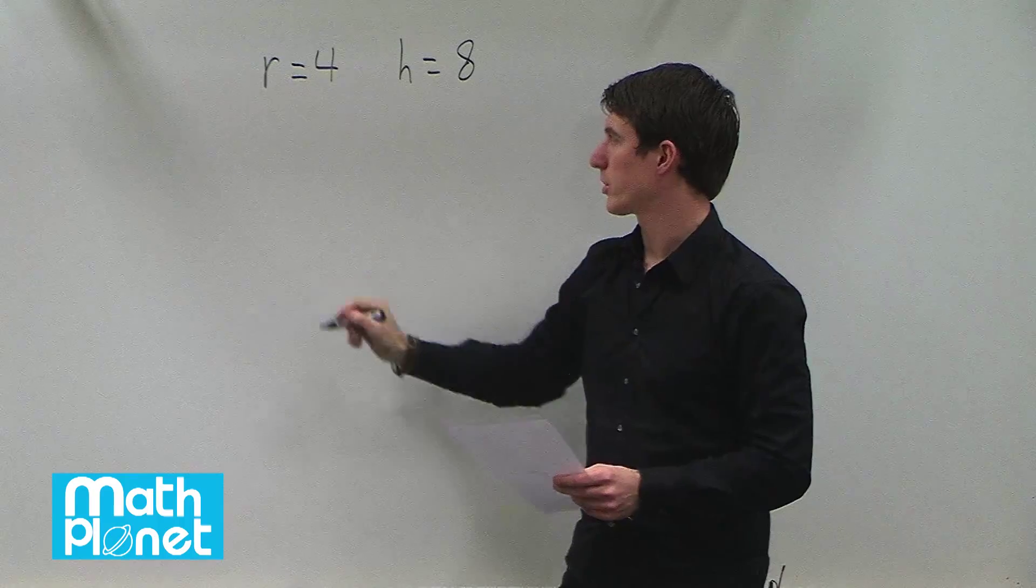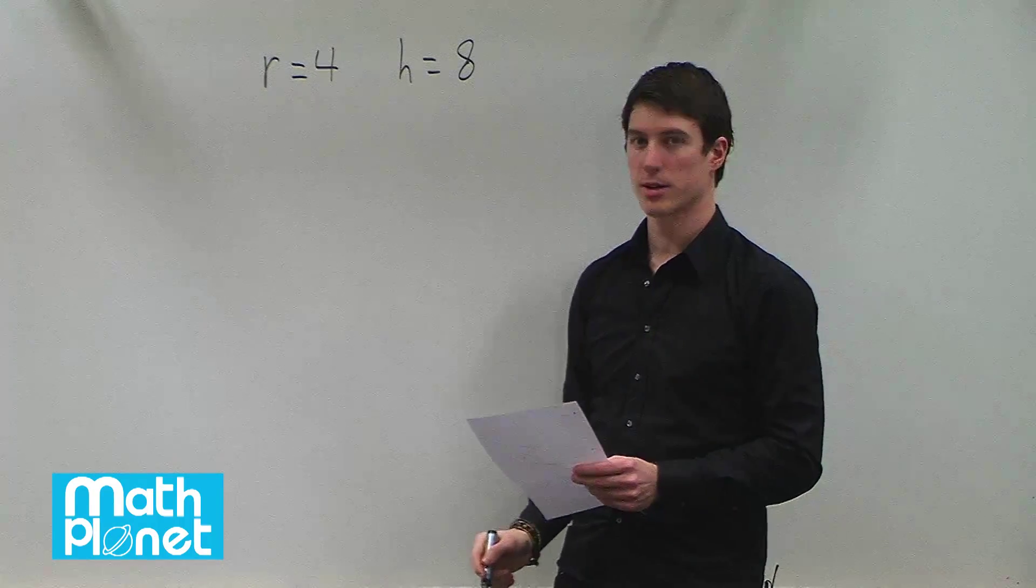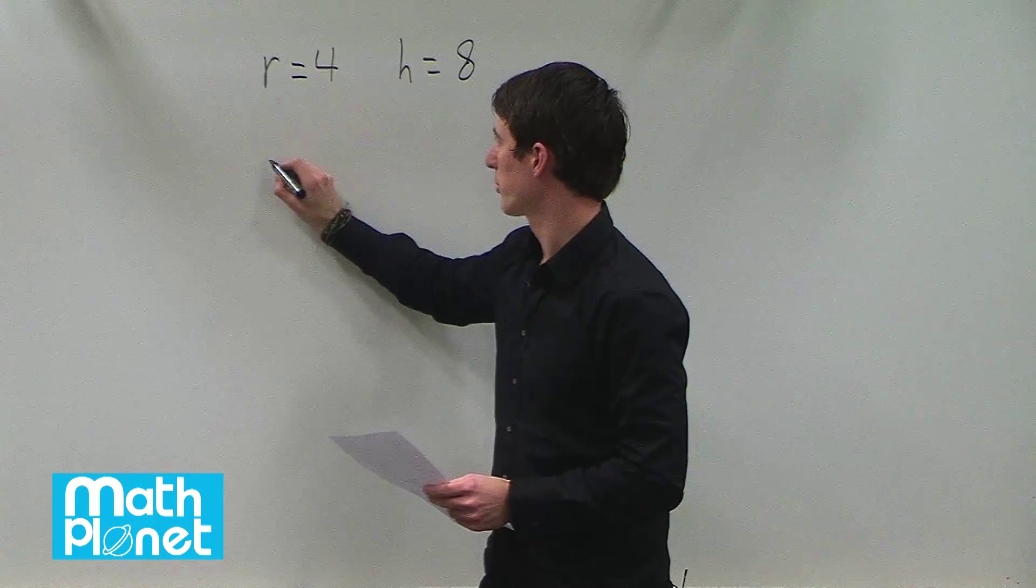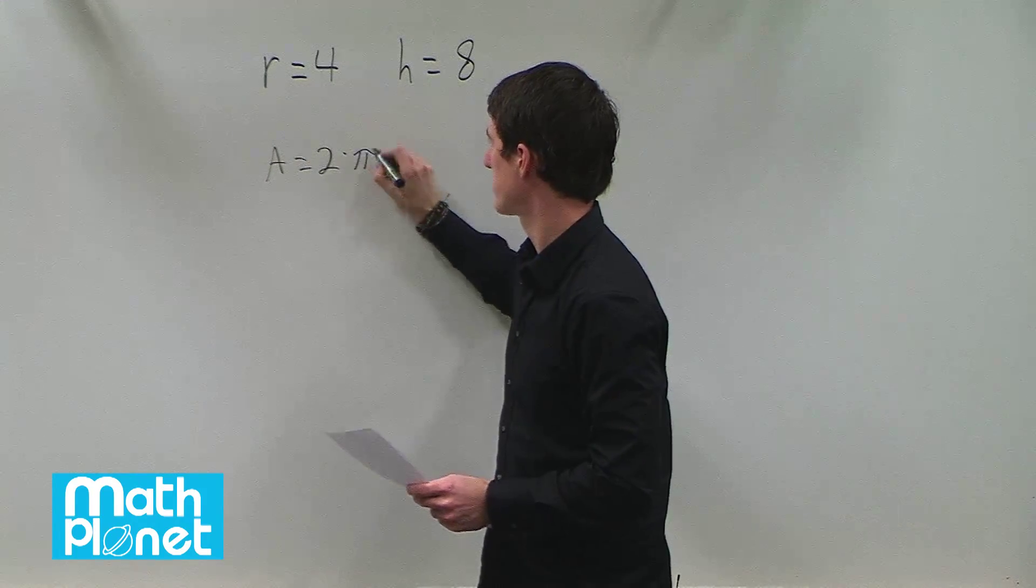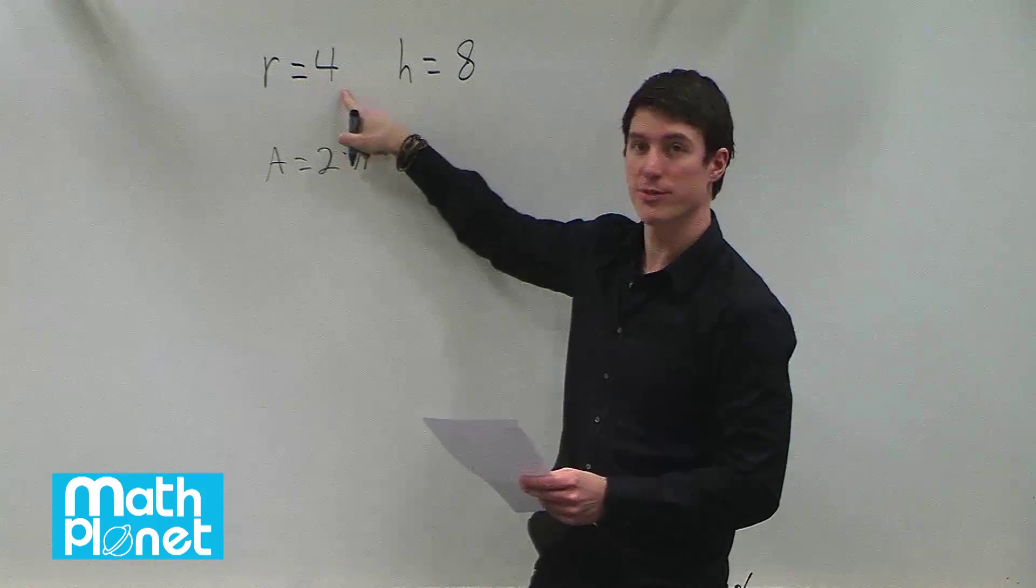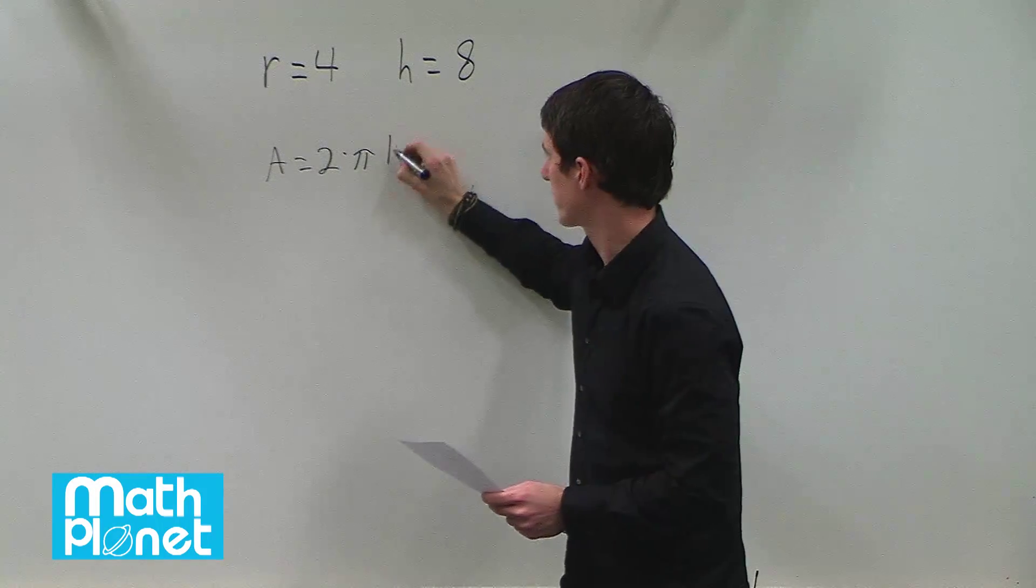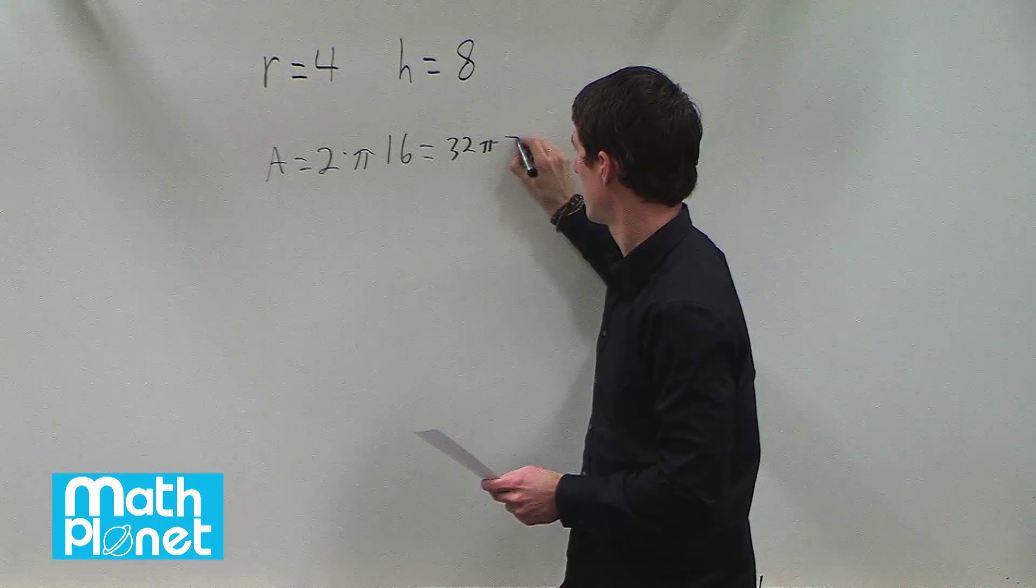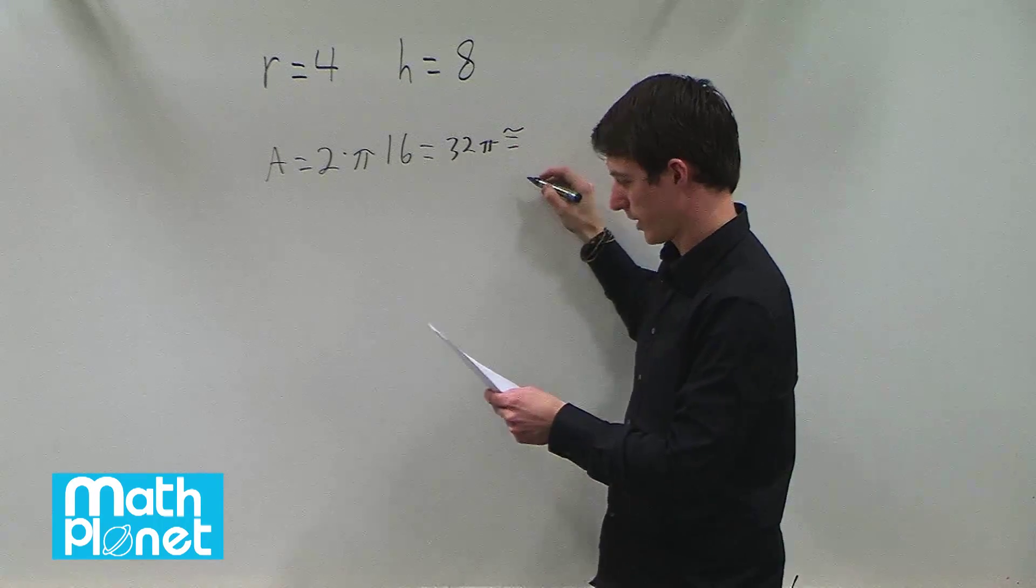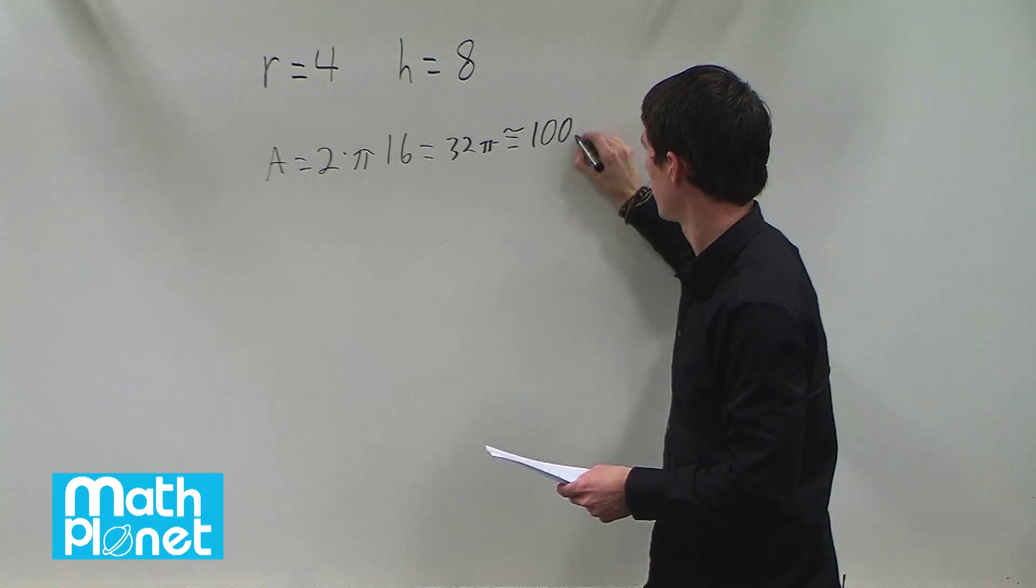To find the area of one circle it's just pi r squared. So the area of both circles is 2 times pi times r squared. So r squared is 4 times 4 or 16. So that comes out to be 32 pi which comes out to be approximately 100.6.